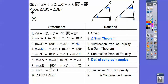Now it says angle E equals 180 minus A minus C. Remember, we had angle E equals 180 minus D minus F. Since A equals D and C equals F, we substituted in — D was replaced by A and F was replaced by C. That's the substitution property. By the transitive property, since both B and E equal 180 minus A minus C, angle B equals angle E.